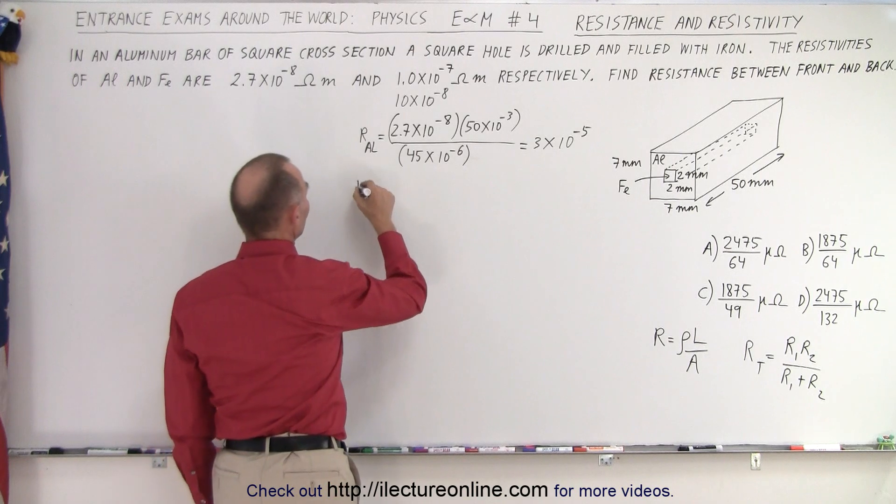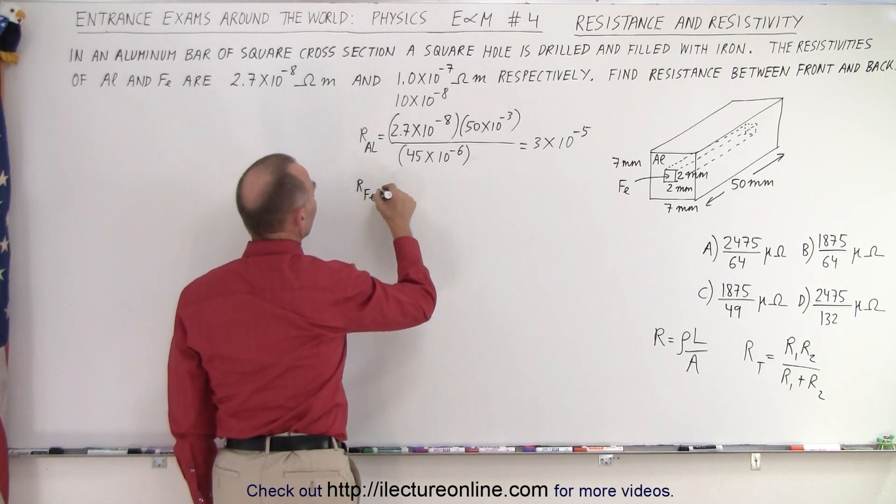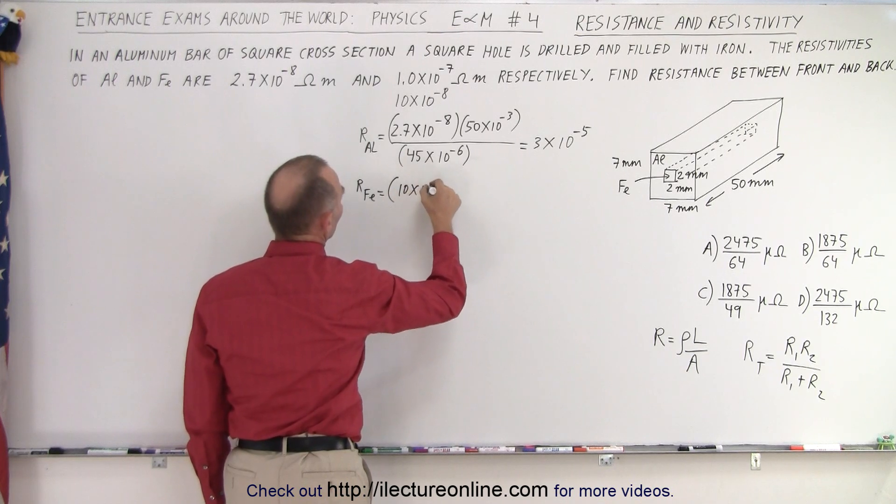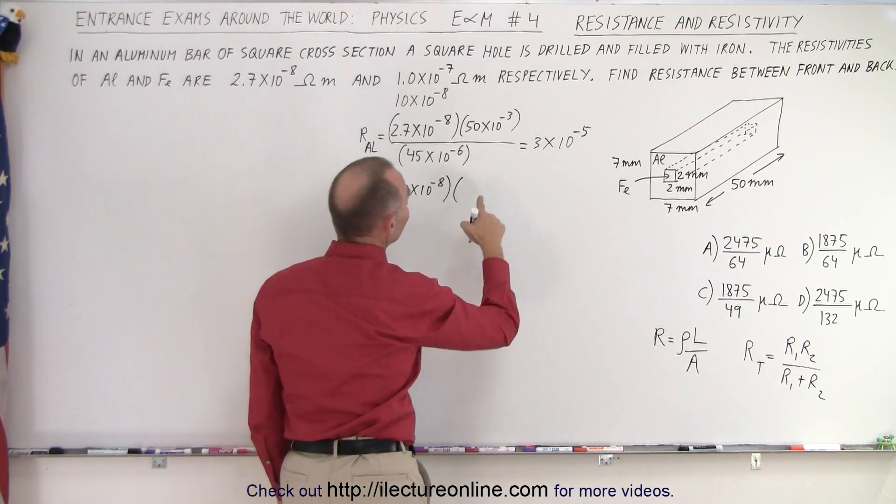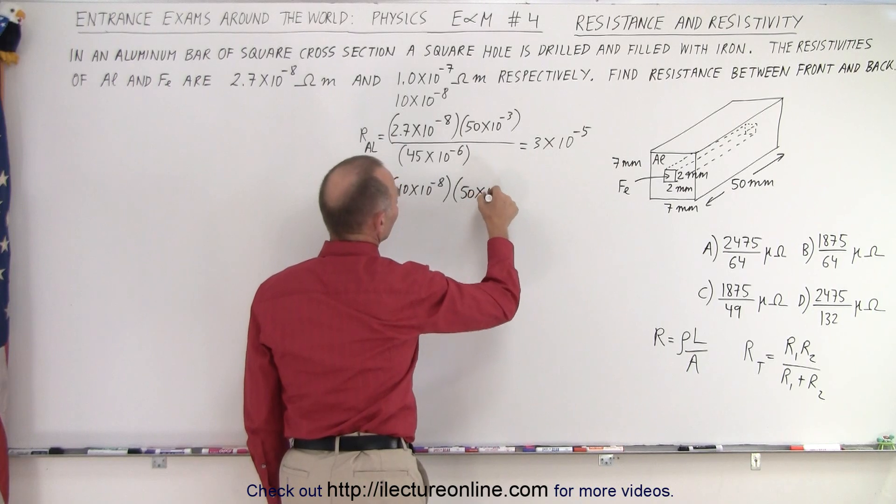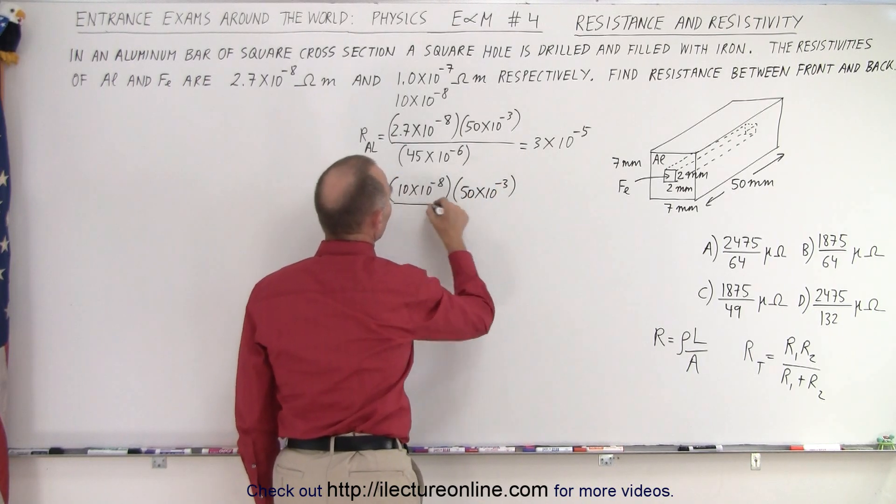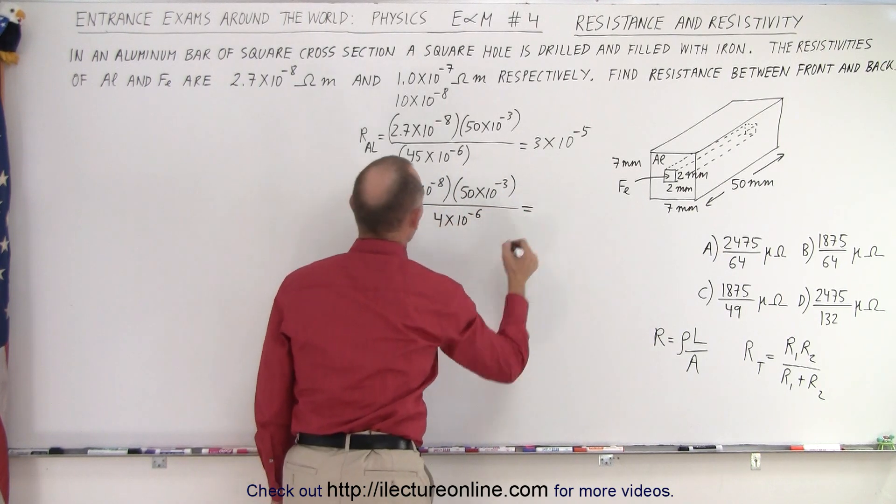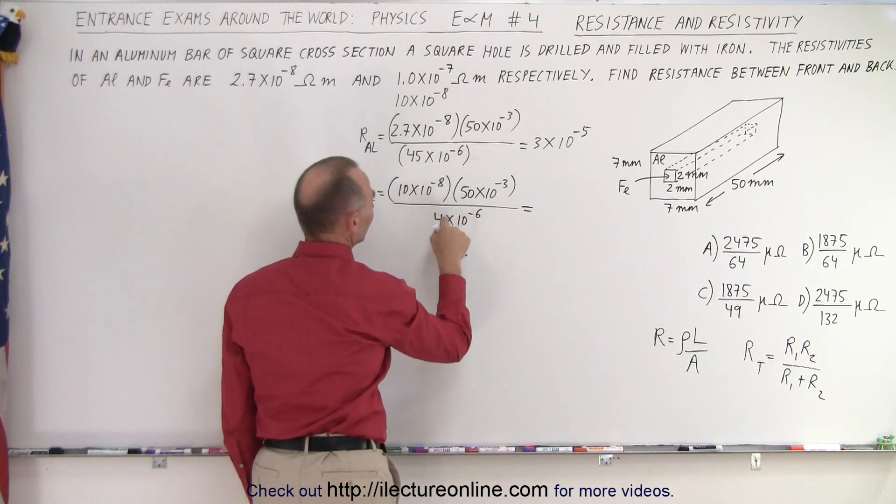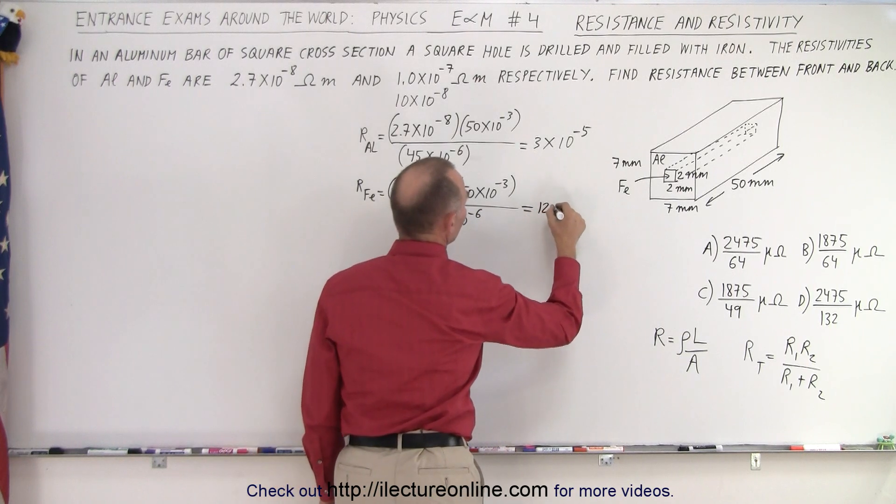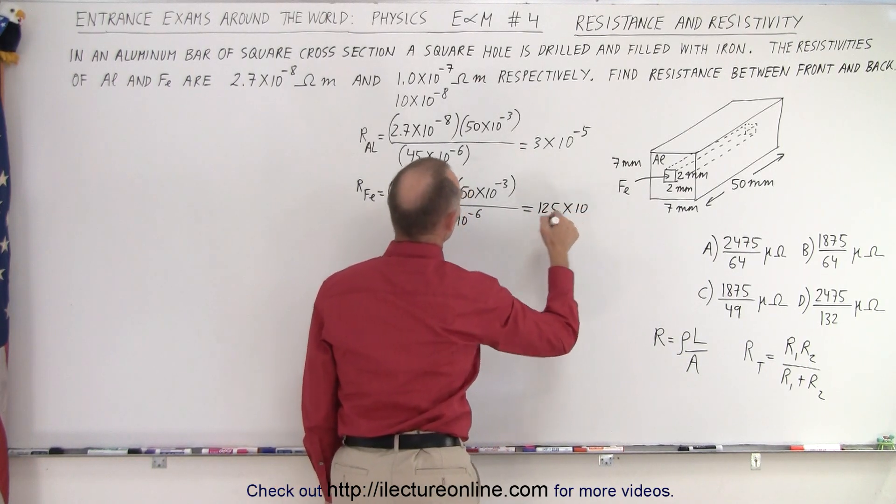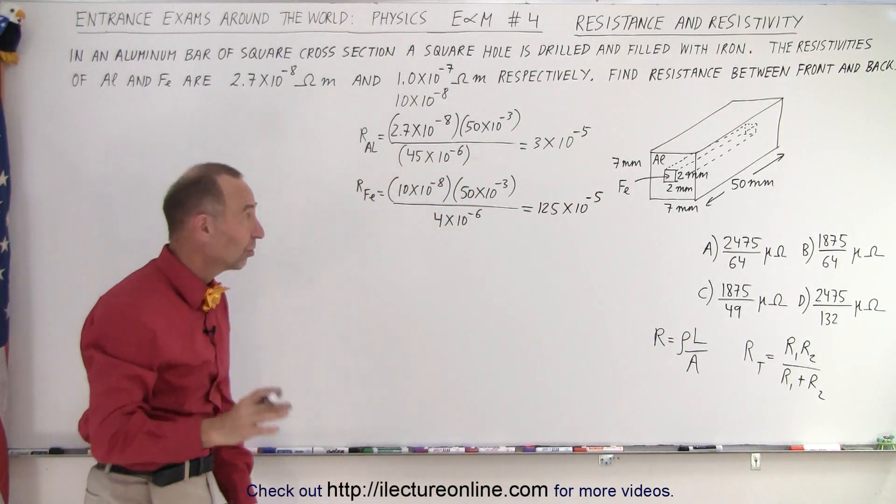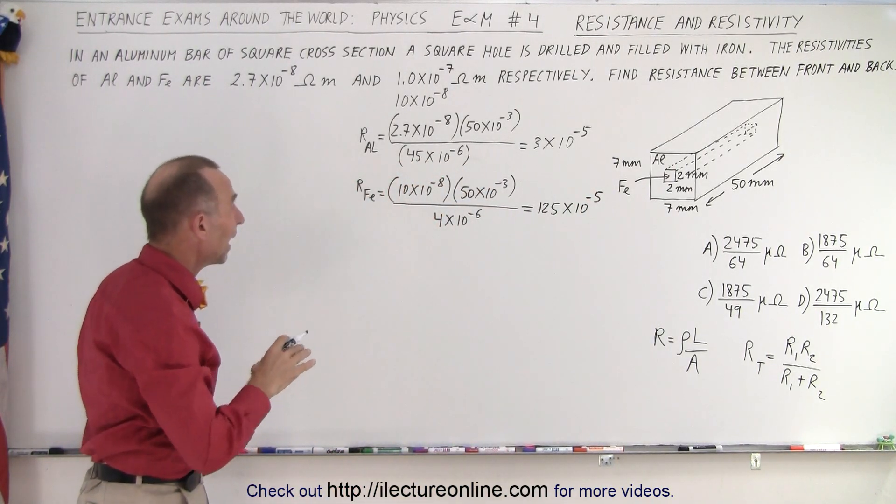Now we have the resistance of the iron, and that's going to be equal to 10 times 10 to the minus 8 times the length, which is also 50 times 10 to the minus 3, divided by the cross-sectional area which is 4 times 10 to the minus 6. So here we have 500 divided by 4 which is 125 times 10 to the minus 11 plus 6 minus 5. So now we have the resistance of both the aluminum and the iron.